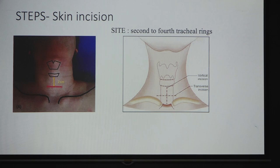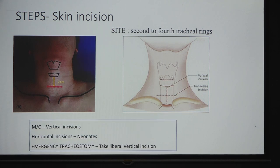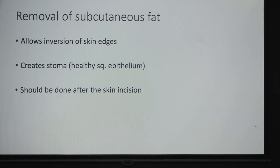A vertical or horizontal skin incision can be used. In emergency settings, a vertical incision is preferred; electively, you can choose either. An important step is removal of subcutaneous fat — this should be done just after the skin incision, not at the end. It helps with inversion of the skin edges and aids in creating a good stoma when taking stitches around it.